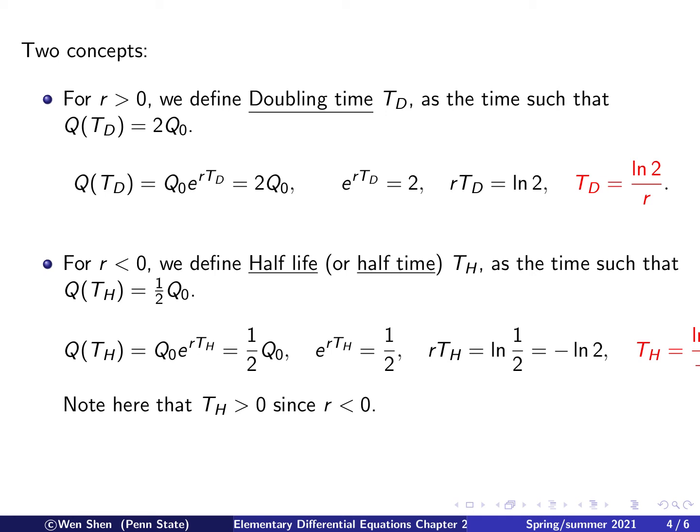And now you might be feeling a bit uncomfortable with the negative sign represented here in the solution of TH. But we don't need to be worried about it. Remember the assumption r is less than 0. So with the negative sign there, we actually have TH is positive because negative sign in front of the r, which is negative, makes it a positive quantity.